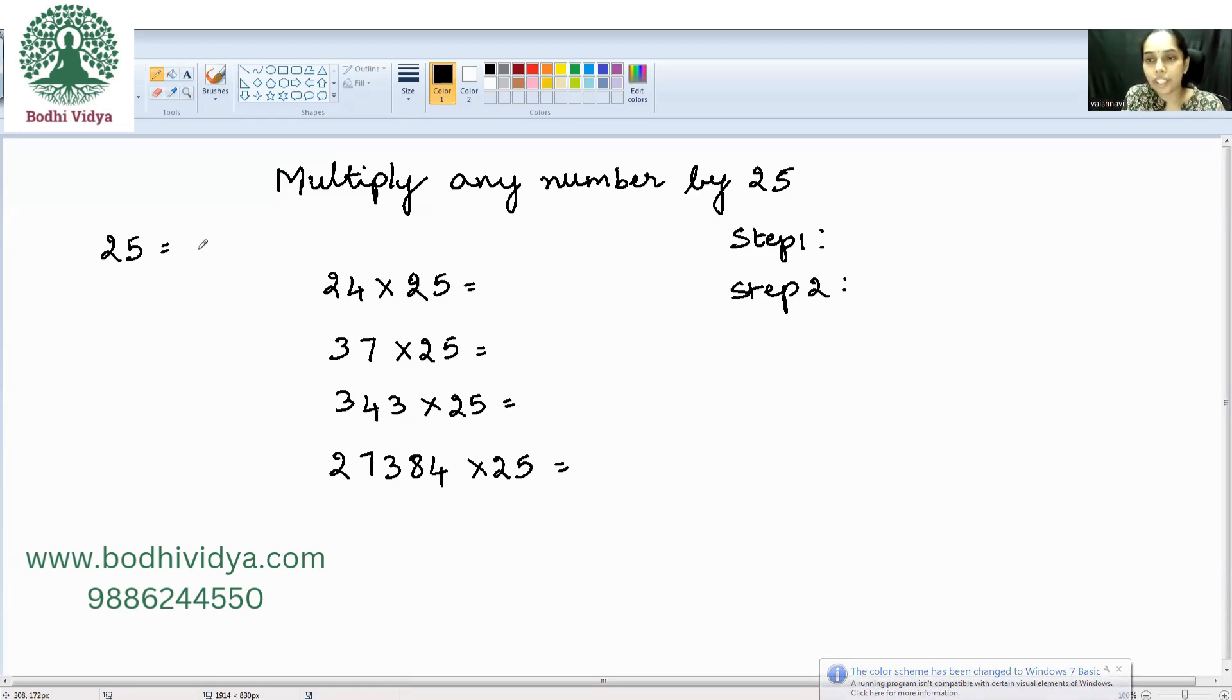So 25 can be interpreted as 100 by 4. When you divide 100 by 4, it is again 25 itself.